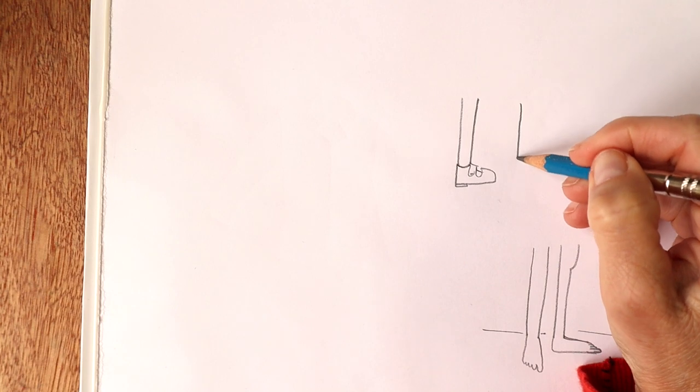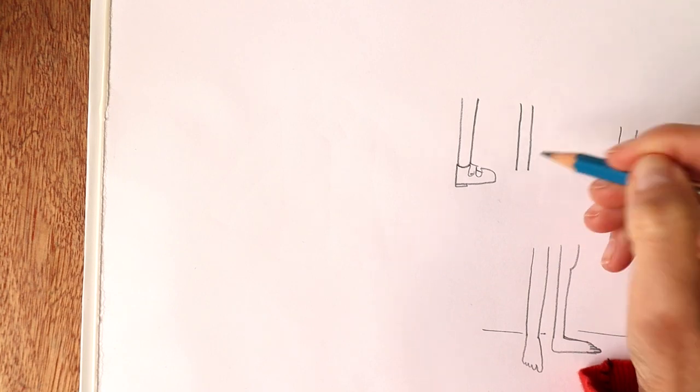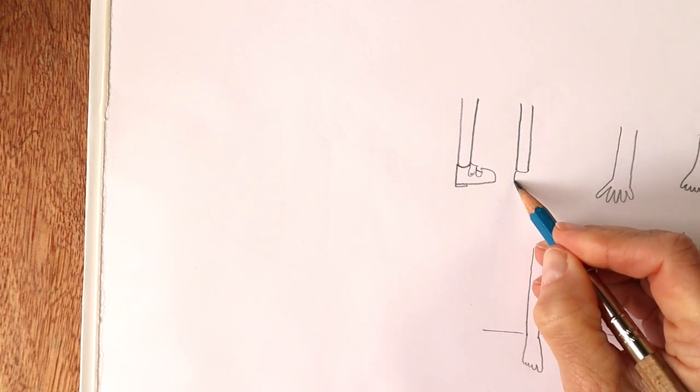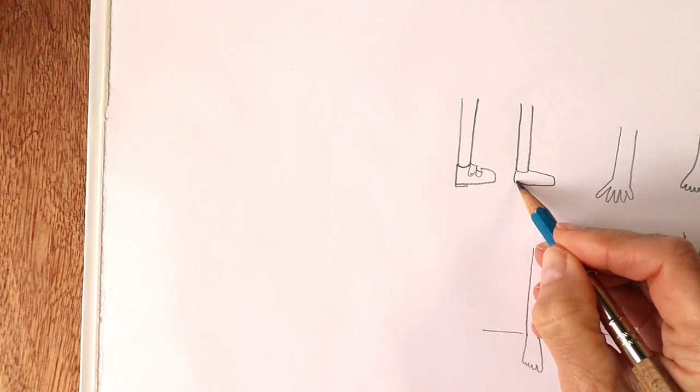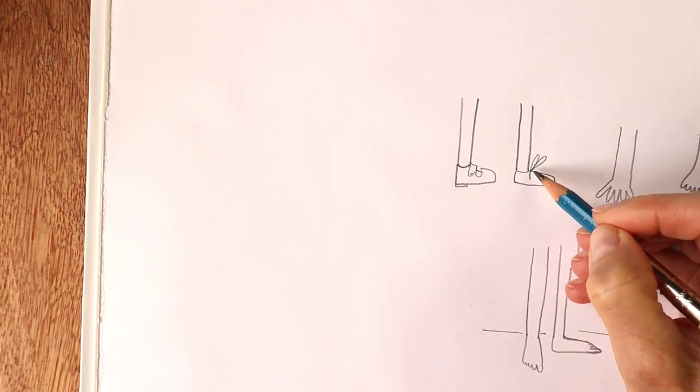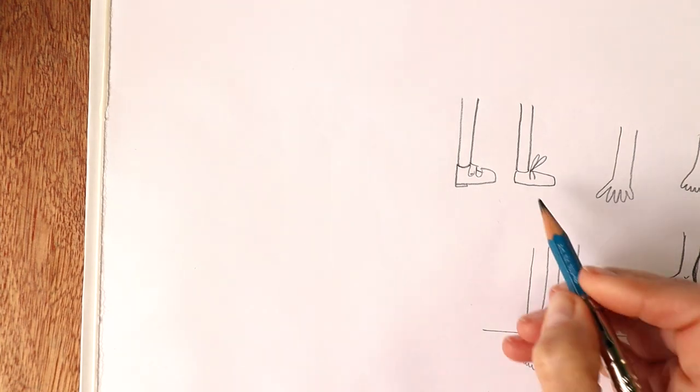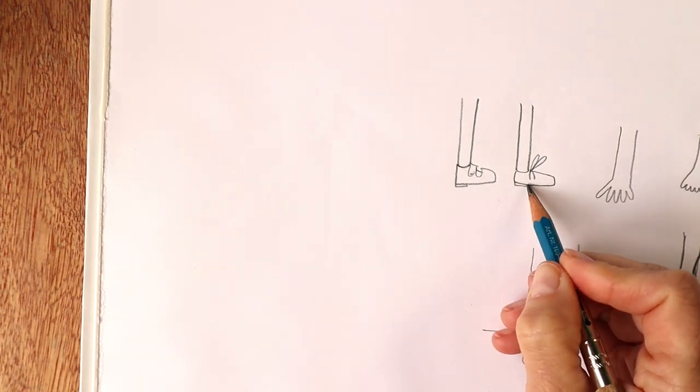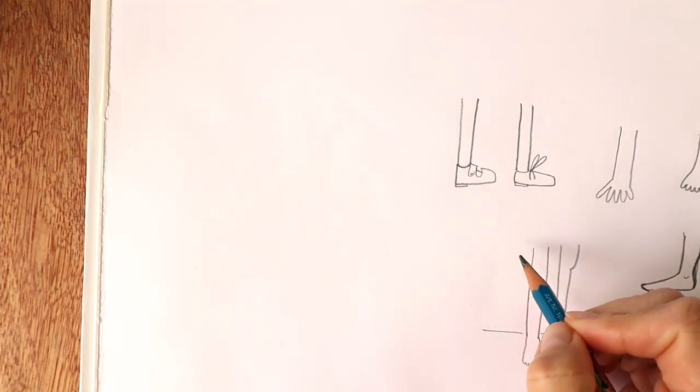Or perhaps you've got somebody who's got bows on their shoe. And just add a couple of big loops. And maybe a little bit of heel if you want to, more like a tap shoe.